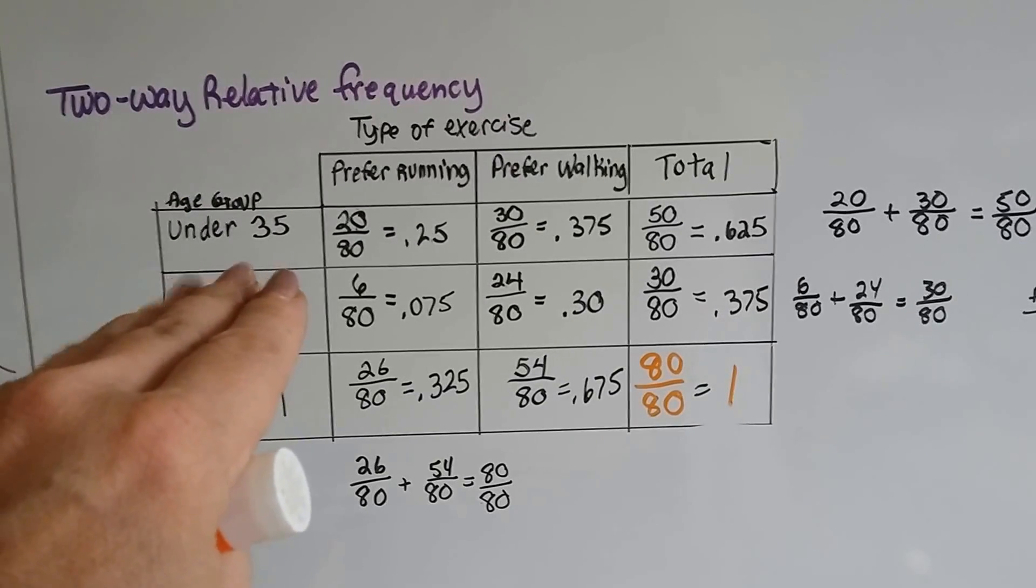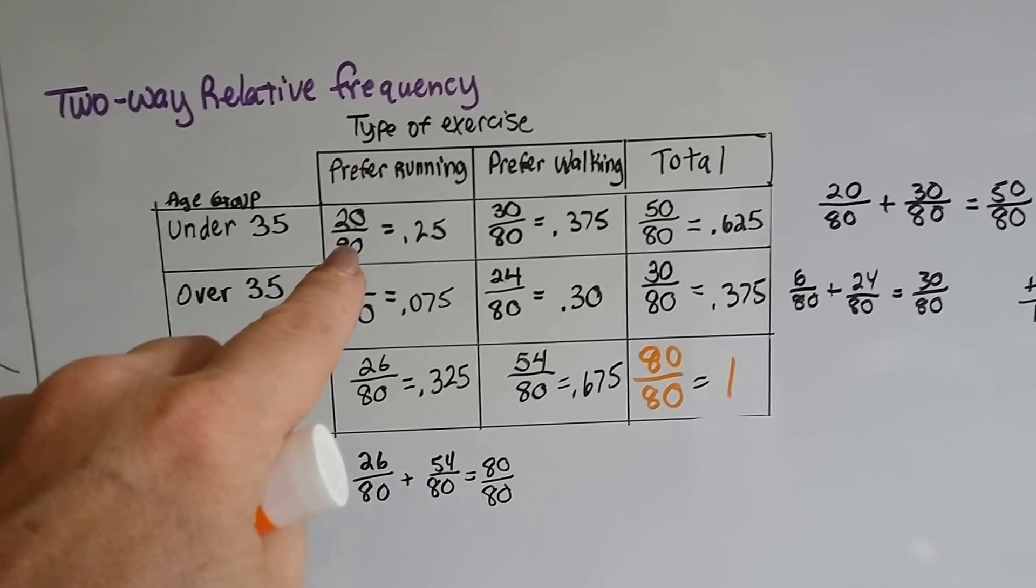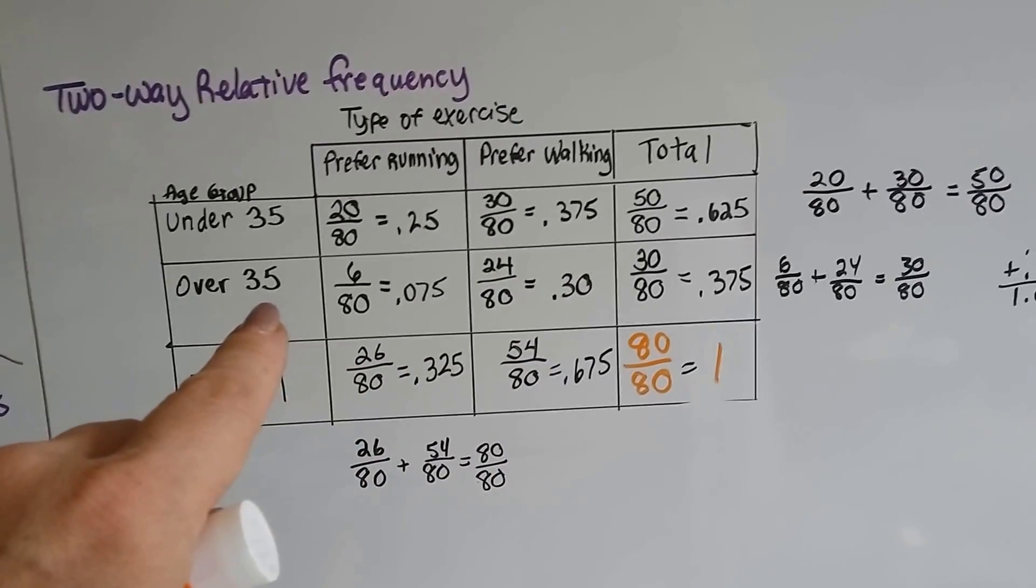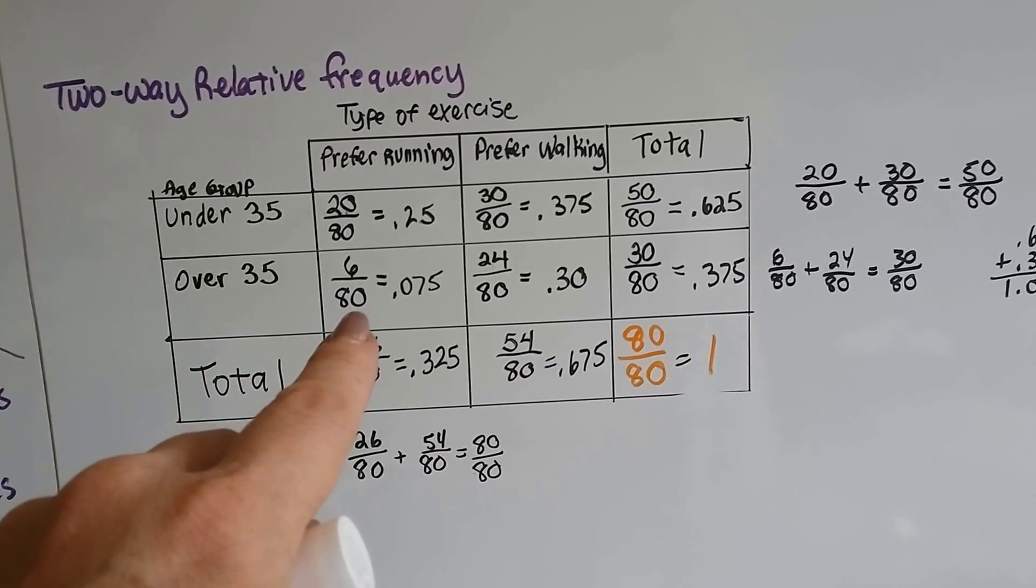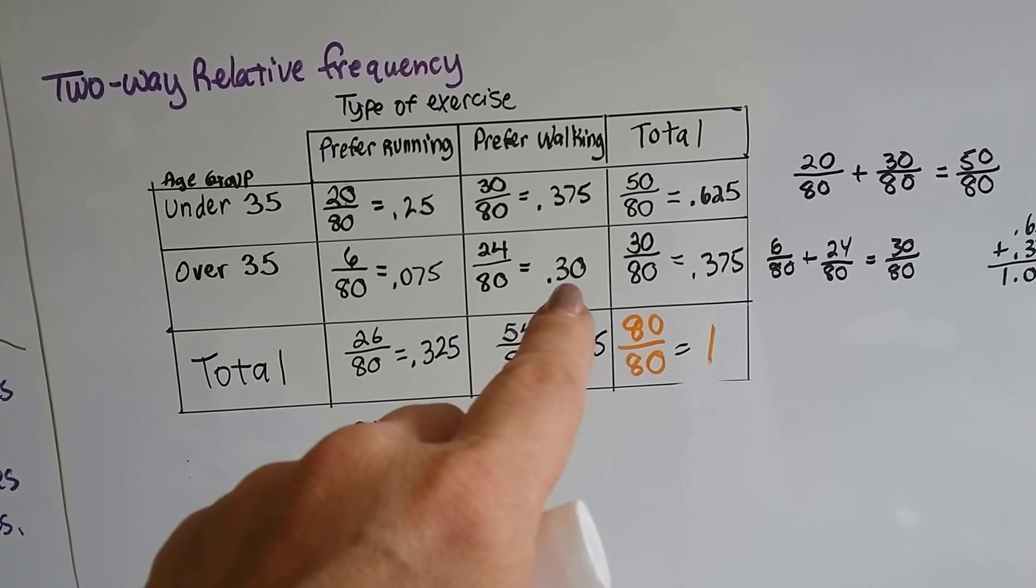People under 35: 20 out of 80 prefer running as an exercise, or 30 out of 80 prefer walking. And for over 35, 6 out of the 80 prefer running, and 24 out of the 80 prefer walking.